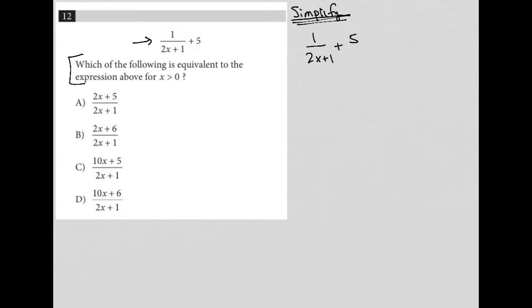I would simplify this expression by, first of all, making this 5 a 5 over 1, and then saying, well, how do I add these two fractions together? In order to add the fractions together, I need to have a common denominator.